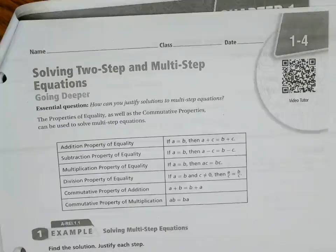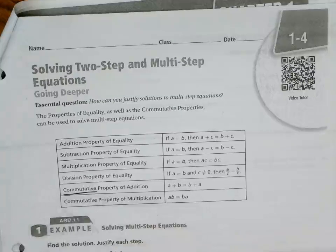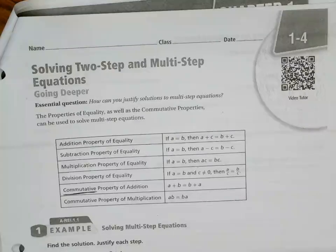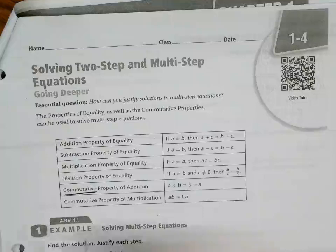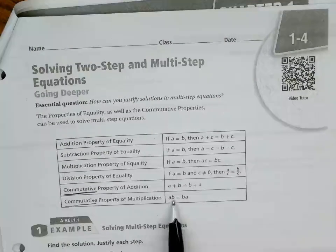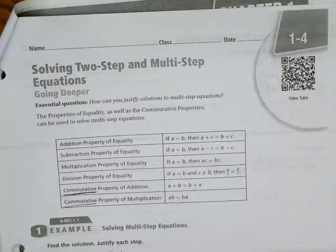The commutative property of addition. Commute — like you're commuting to work, you're moving. Your parents commute to work, they drive to work, that means they are moving. So that's when the order changes. A plus B equals B plus A. Addition is commutative — you can do it in a different order. The commutative property of multiplication: same thing, A times B equals B times A. So commutative is when the order changes. Associative is when the parentheses move.